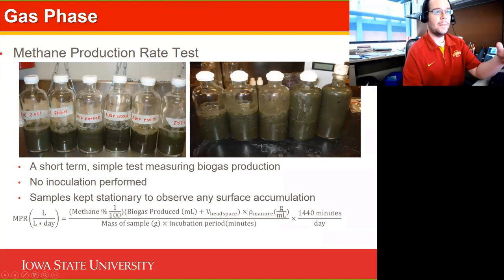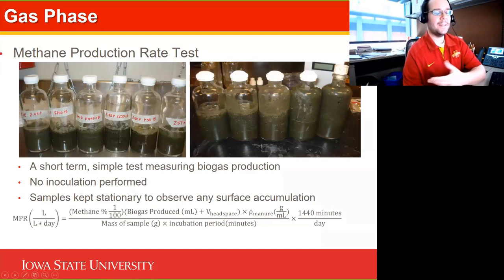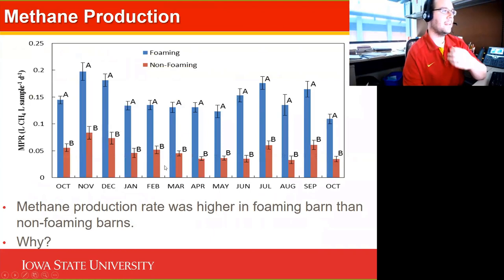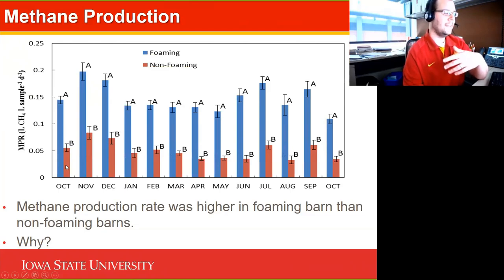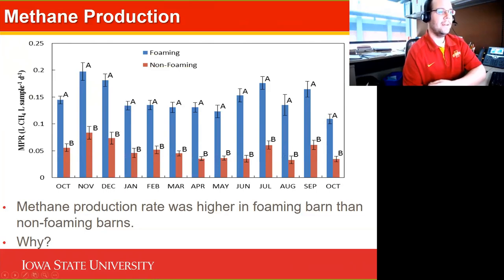The bottles were incubated for a short period at room temperature, generally about three days. What was really interesting is that in many cases if we got manure from a foaming pit, you could see foam develop even within that bottle — sometimes one to two-thirds full of foam, or in a couple cases it would explode and pop out. We were trying to get a handle on that gas production phase, specifically methane, and over a one-year period sampling 60 barns across Iowa and Minnesota, methane production rates in foaming manures were about three times faster than in non-foaming barns.